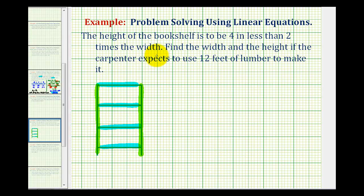We don't know the width or the height, but we know that the height is four inches less than two times the width. Let's let the width be x inches. So this would be x inches, this would be x inches, and so would these two.